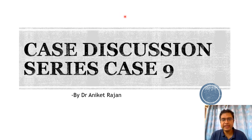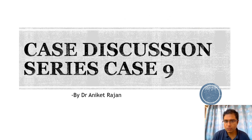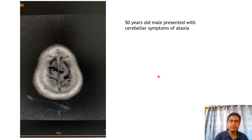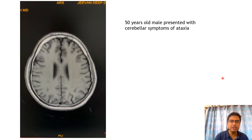Hello everyone and welcome to case 9 of this case discussion series. Today we will be discussing a case that I recently encountered — it was a bit complex. We have a 50-year-old male who presented with cerebellar symptoms of ataxia, and the history was not very clear. This is the MRI brain of that patient — the axial T1-weighted images.